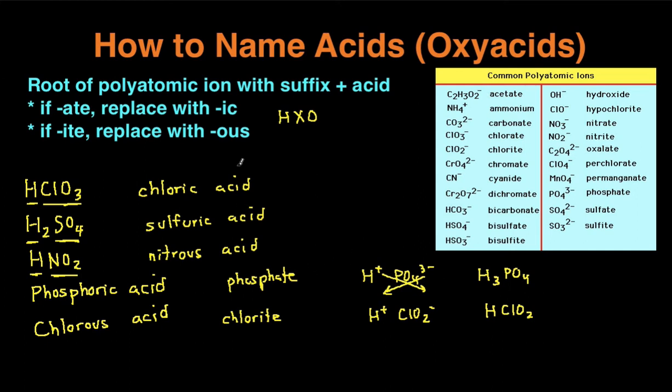And that's it. That's how you name oxyacids. It really just comes down to knowing this rule that if your anion ends in ATE, you replace with IC. And then if it ends in ITE, you replace with OUS. And then the main exceptions were, remember sulfate and sulfite, these become sulfuric and sulfurous. And then phosphate becomes phosphoric. Other than that, everything else is standard.